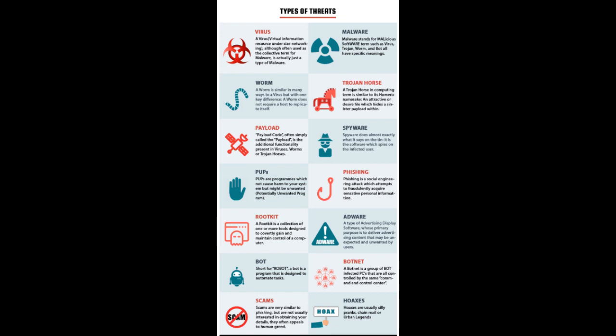Spyware — spyware does almost exactly what it says on the tin; it is software which spies on the infected user. PUPs — potentially unwanted programs are programs which do not cause harm to your system but might be unwanted. Phishing — phishing is a social engineering attack which attempts to fraudulently acquire sensitive personal information. Rootkit — a rootkit is a collection of one or more tools designed to covertly gain and maintain control of a computer.